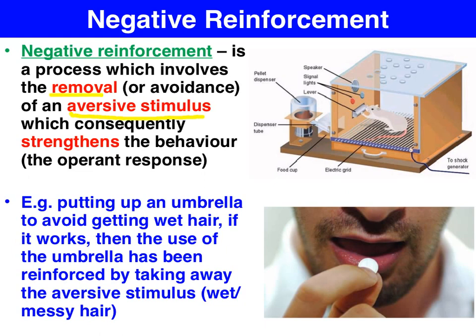In the case of the Skinner Box, following the sounding of a particular noise and a light flashing, the rat had a few seconds to hit the lever in order to remove the aversive stimulus, which was the electric shock. So the behaviour being reinforced in this case was lever pressing, and the aversive stimulus was the removal of the electric shock.